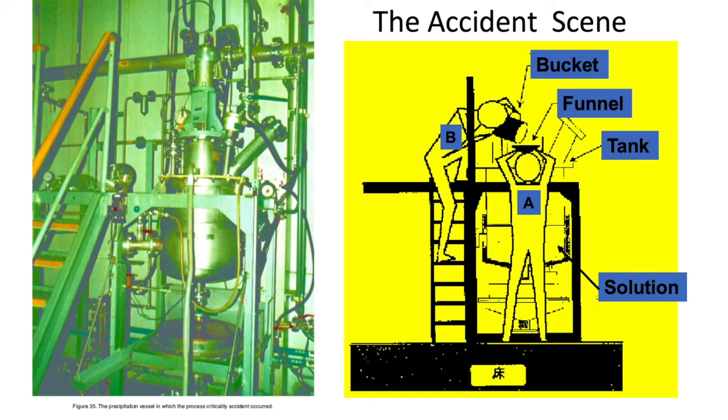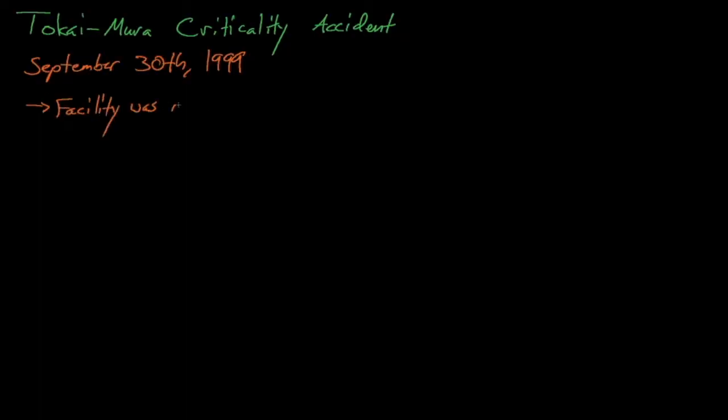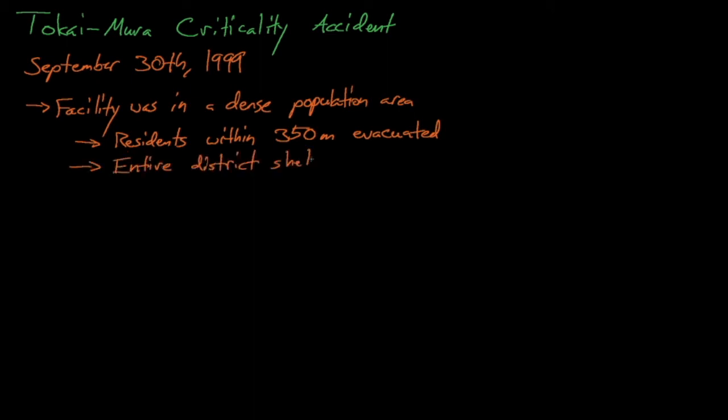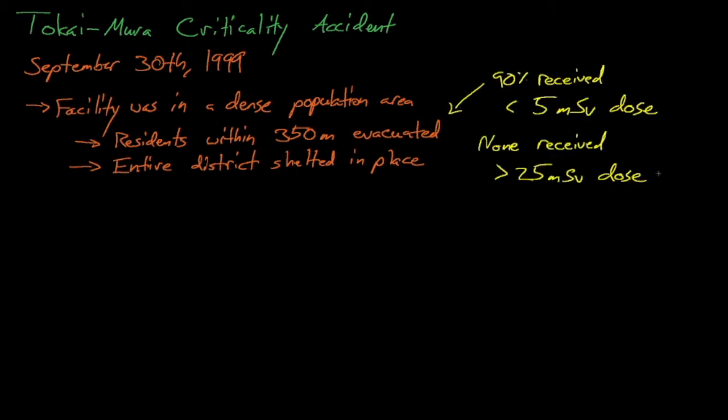When all was said and done, the accident resulted in about 2.5 x 10 to the 18 fissions. The JCO facility was located in a densely populated area, and because of the radionuclides emitted by the supercritical excursions, all of the residents within 350 meters of the facility were evacuated during the accident. Additionally, the entire district was ordered to shelter in place. When all was said and done, about 90% of the residents received less than 5 millisieverts of dose, and no member of the public received more than 25 millisieverts of dose. Produce and milk production in the district was banned following the accident.